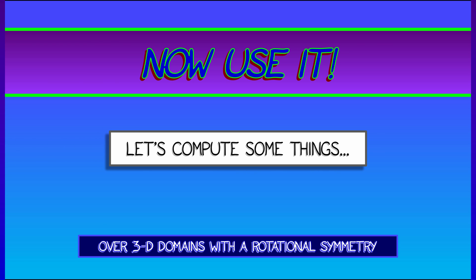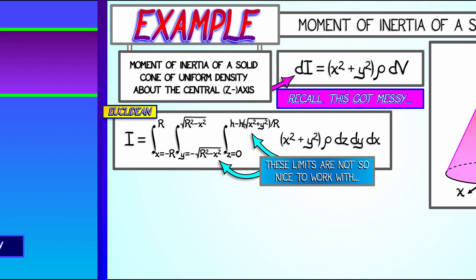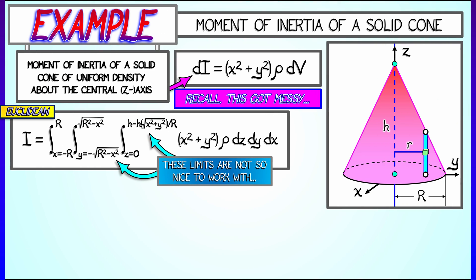Let's begin with a three-dimensional problem that has some rotational symmetry that has caused us difficulty in the past. Remember, from chapter 7, where we tried and failed to compute the moment of inertia of a solid cone about a vertical axis, the z-axis, going through the apex of this cone. That triple integral was not pleasant. The limits of integration were just awful.